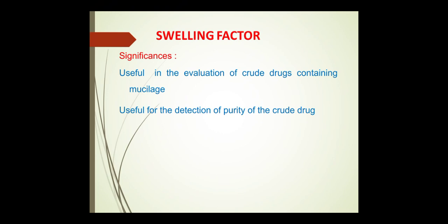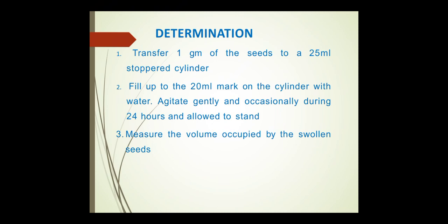Next, swelling factor. It is useful in the evaluation of crude drugs containing mucilage and also for detection of purity of the crude drug. To determine it, transfer 1 gram of seeds to a 25 ml stoppered measuring cylinder, fill up to the 20 ml mark with water, agitate gently and occasionally during 24 hours, then measure the volume occupied by the swollen seeds and calculate the swelling factor.